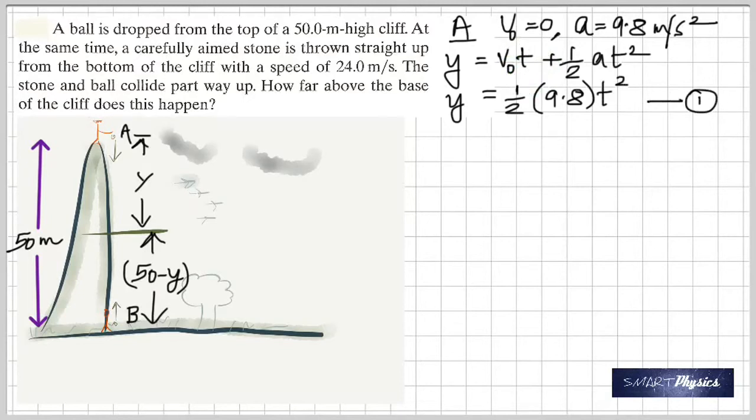Now when we start thinking about the stone that is thrown up, what is the initial velocity? It's not zero, it's 24 meters per second, which is given. Since it's going up against gravity, it is slowing down, therefore its acceleration is negative 9.8 meters per second squared.